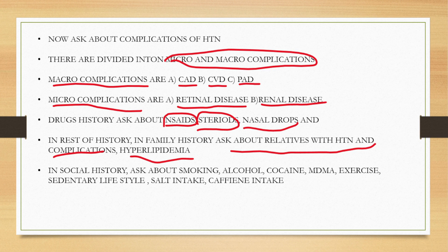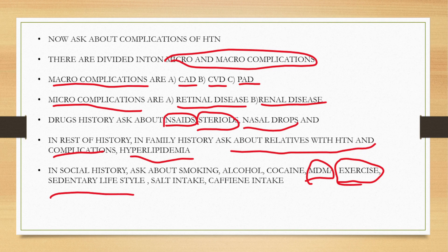In social history, which is very important, we include smoking, alcohol, cocaine, and MDMA abuse, which is ecstasy. We will ask whether the patient has a sedentary or active lifestyle and whether they exercise. We will also ask about salt intake and caffeine intake, both of which can contribute to hypertension.